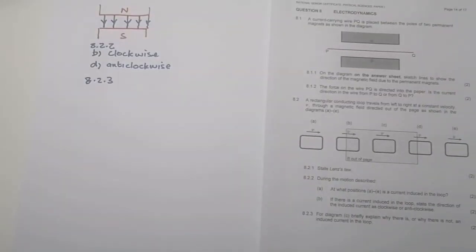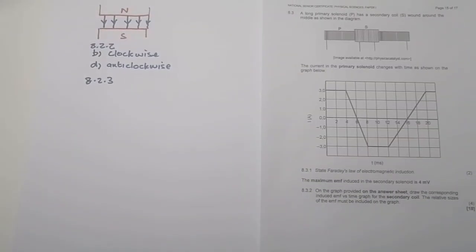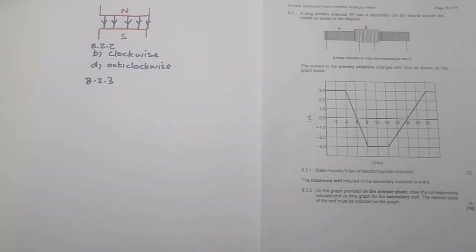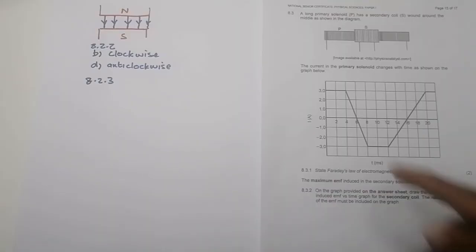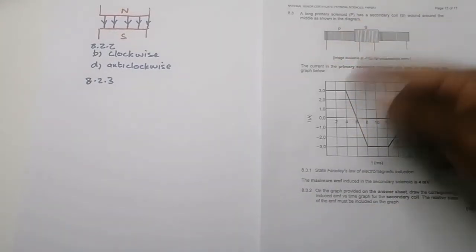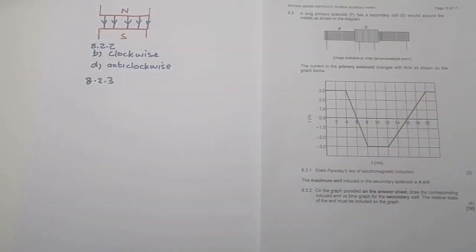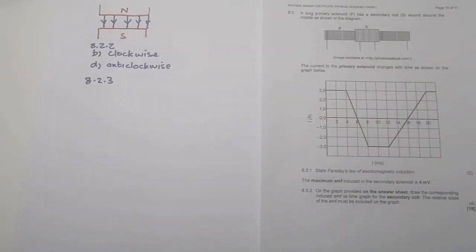Moving right along to the second portion. We've got a long primary solenoid P with a secondary coil wound around the middle, as shown in the diagram. The primary solenoid has many windings and the secondary one has fewer windings — so obviously this is a step-down transformer. They are asking about the current in the primary solenoid that changes with time as shown in the diagram.